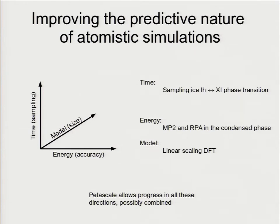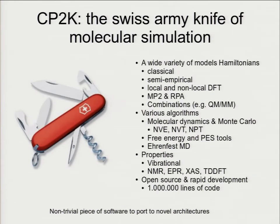I will talk about these three topics: how we can sample in density functional theory things like phase transitions; how we can improve the energy resolution beyond standard GGA-DFT; and how we can get towards large models using linear scaling density functional theory, which allows system sizes to grow with a cost that grows proportionally. All of this is based on CP2K, which we brand as the Swiss Army knife of molecular simulation, because it's mostly developed in Switzerland. It's a code with a lot of features, fairly complex, and not small.